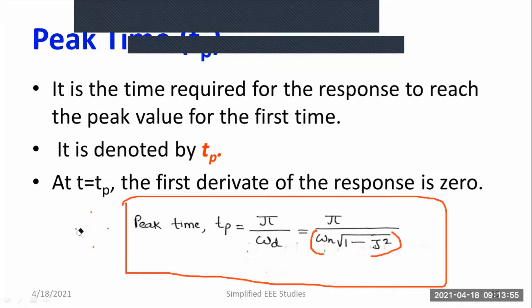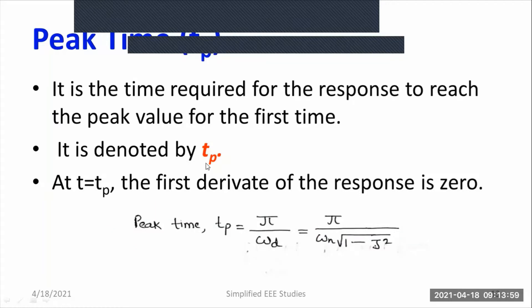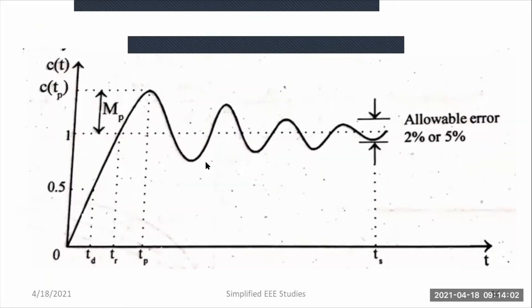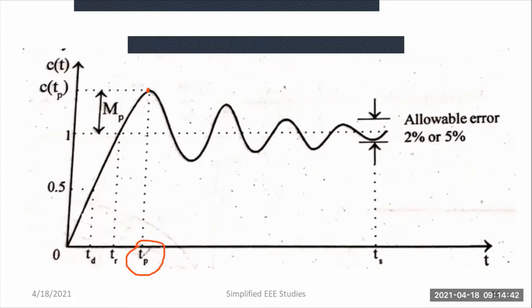I will show you what peak time means with the help of a response. Consider a second order underdamped response — the graph shows c(t) versus time. The time required to reach the peak value for the very first time is your peak time, indicated by Tp. This is the peak value of the response, and this is the corresponding peak time Tp.